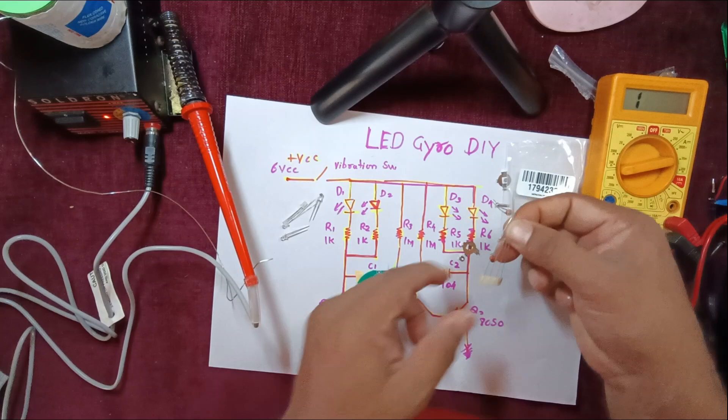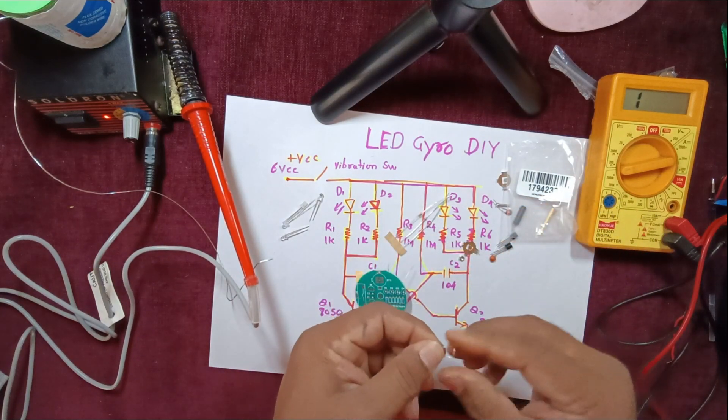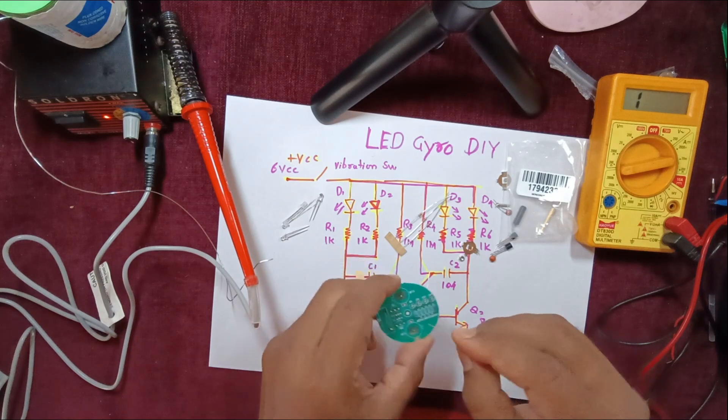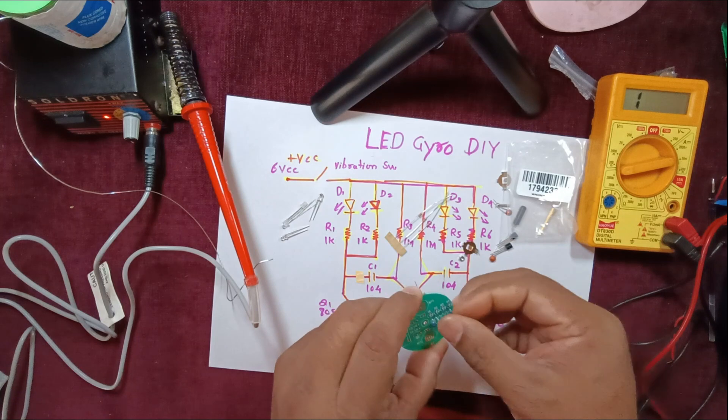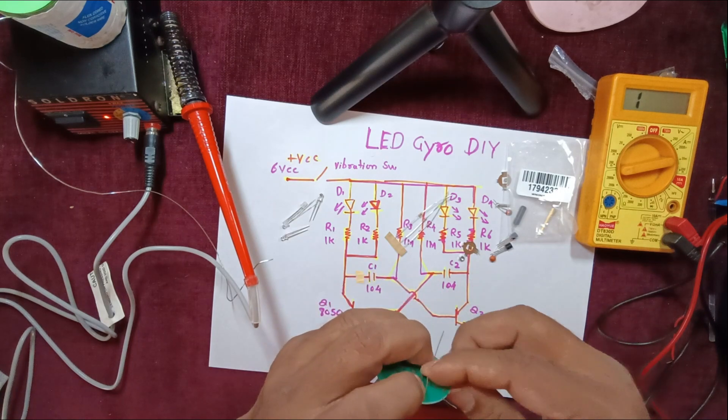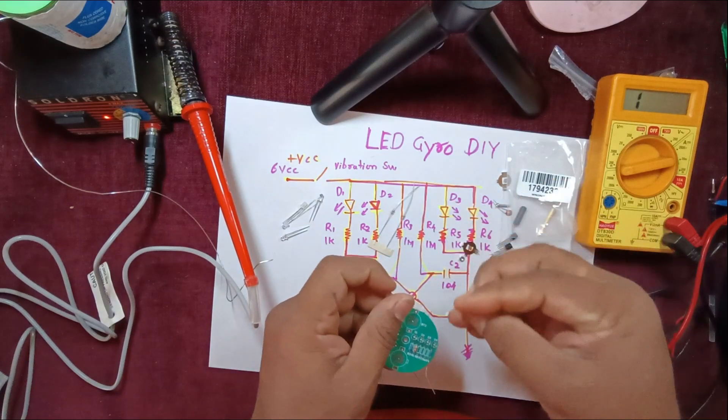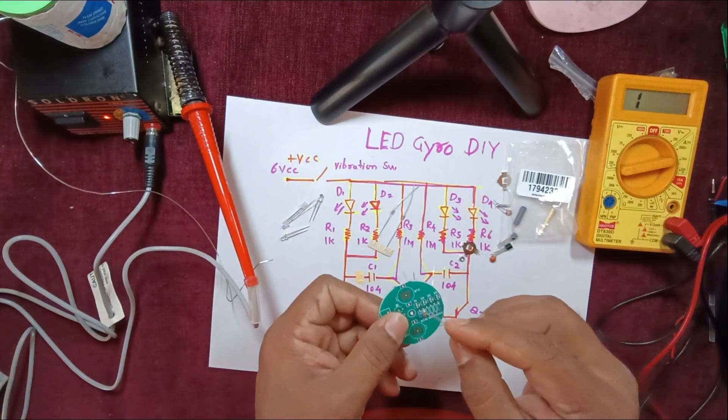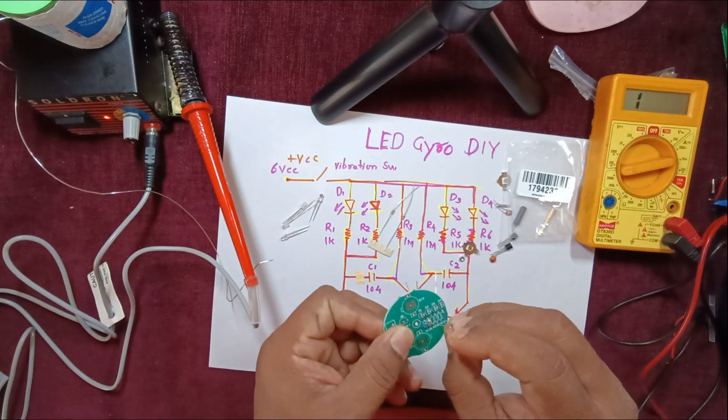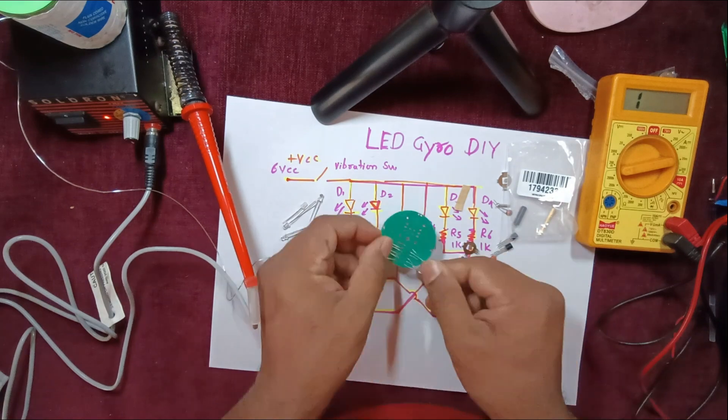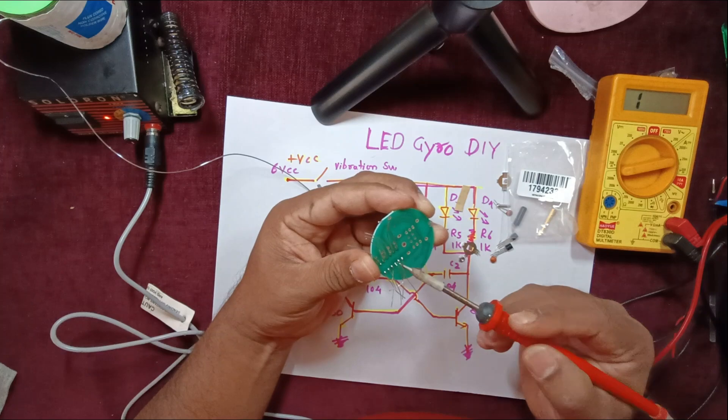Then you have got one k resistor over here. I've got four one k resistors. R3 and R4 are one megaohm, you can see.